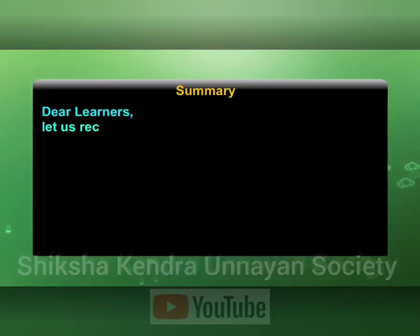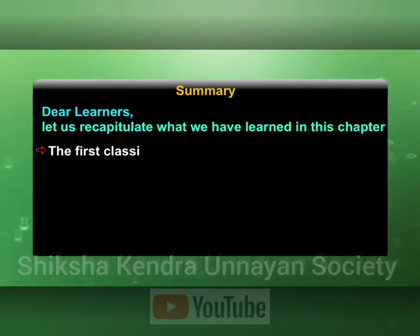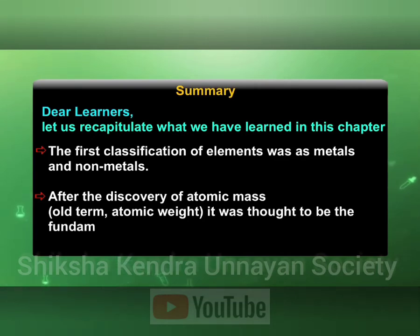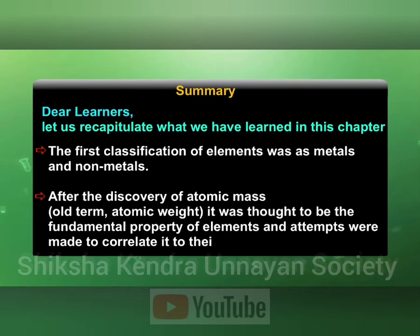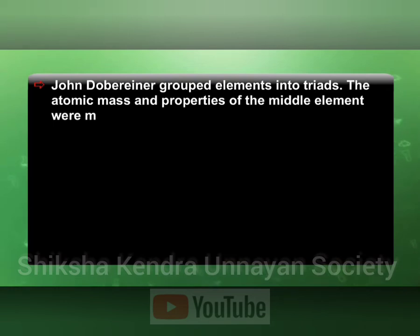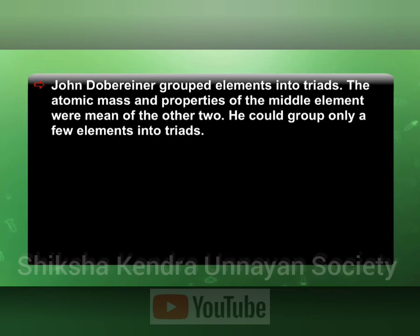Let us now recapitulate what we have learned in this chapter. The first classification of elements was as metals and non-metals. After the discovery of atomic mass, then called atomic weight, it was thought to be the fundamental property of elements and attempts were made to correlate it to their other properties. John Dobereiner grouped elements into triads — the atomic mass and the properties of the middle element were the mean of the other two. He could group only a few elements into triads.